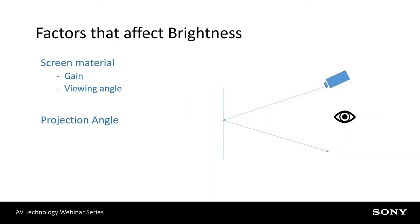Other things that affect brightness include screen material, viewing angle, and projection angle. When light hits a screen, the screen's primary job is to reflect that light back toward the viewer's eye. In an ideal installation, the angle reflecting off the screen comes back at the viewer's eye, but very rarely is there an ideal installation. If you think 5,000 lumens is adequate and it's close, you have to take these other factors into account — because while it might work in a perfect installation, in the real world it may suddenly not be adequate, and by the time you realize that, it's too late.